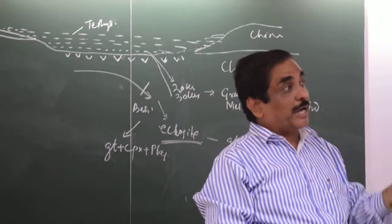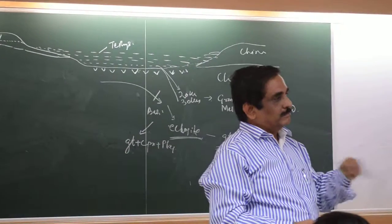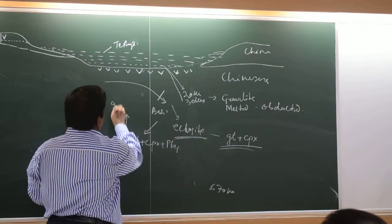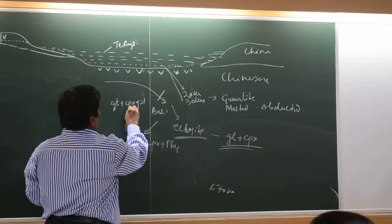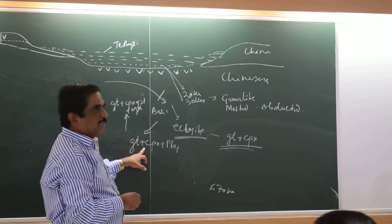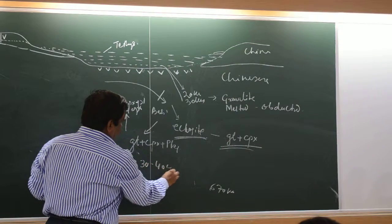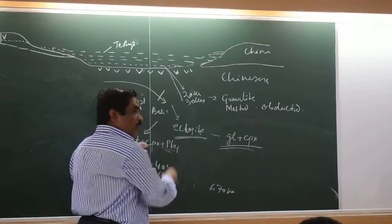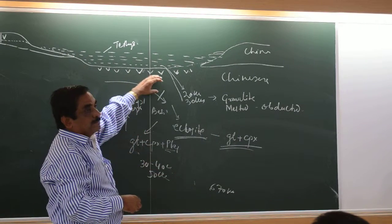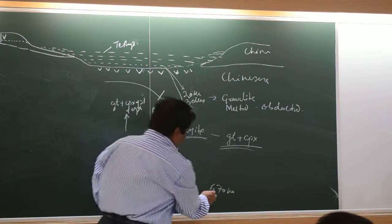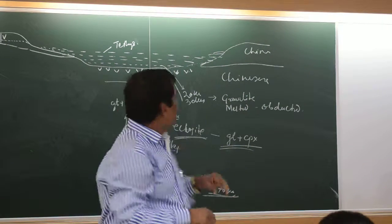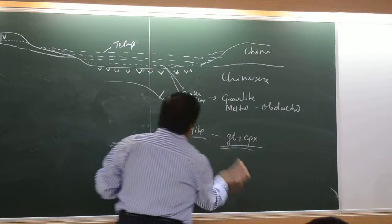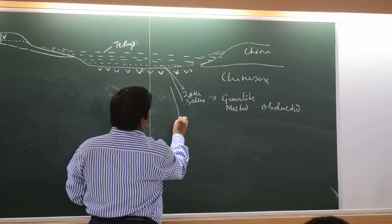OPX does not continue for higher grade granulite facies metamorphism — this is an abolition reaction. So OPX will convert to garnet. As you go down, initially there will be garnet plus Cpx plus OPX. If you go further below, at 30 to 40 km, 50 km, when all OPX will go out, then plagioclase will go out to form the eclogite. So this eclogite can go up to 600 km. But the sediments will not go — sediments will be thrown out.